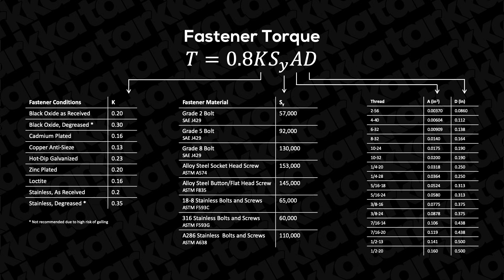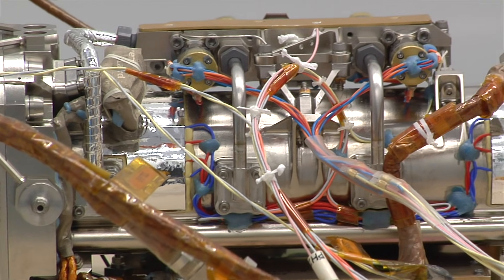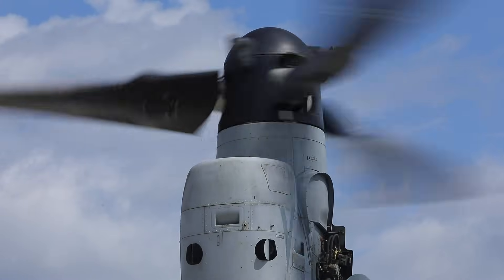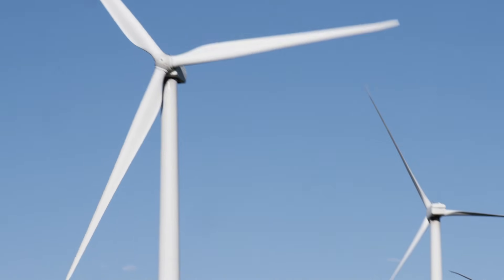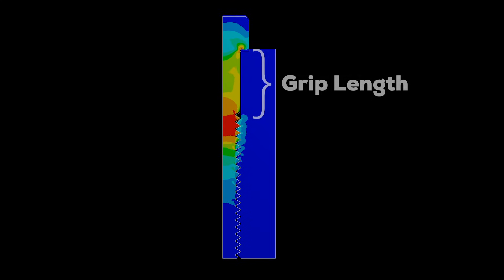However, even when the K factor is chosen correctly, the torque method is only accurate to within plus or minus 25 percent. For statically loaded joints, there's no reason not to apply the maximum preload to the fastener. However, if a joint is loaded cyclically, the fastener may be subject to fatigue and the preload and fastener material may need to be adjusted to account for the cyclic stress. Another closely related parameter is the grip length of the screw. This is the distance between the head of the bolt and the start of the thread engagement, and the longer this distance is, the more resistant the screw will be to loosening.